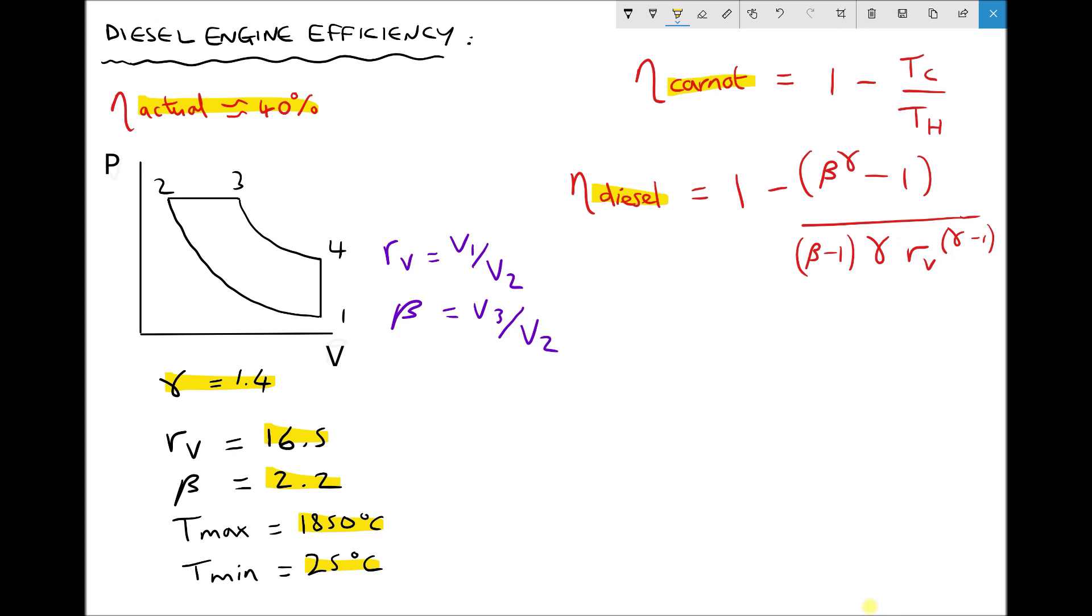So volumetric compression ratio is something that we've seen previously and we're going to need the volumetric compression ratio in order to calculate our ideal diesel efficiency. All we mean by the volumetric compression ratio is the difference between the volume of air before compression and the volume of air after compression.